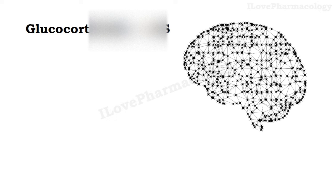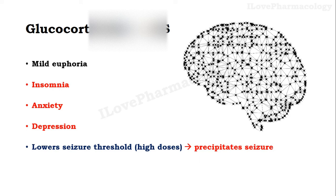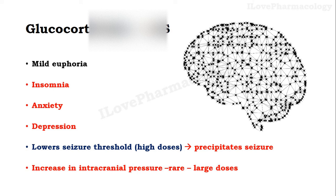Coming to glucocorticoid action on the CNS. At therapeutic doses it has a mild euphoric effect, but if used for a prolonged duration it can lead to insomnia, anxiety, and depression. One should remember that if a patient is prone to or susceptible to epilepsy, you should be very careful with glucocorticoids, because glucocorticoids will lower the seizure threshold particularly at higher doses, thereby precipitating seizures. Also, rarely at larger doses it can increase intracranial pressure.